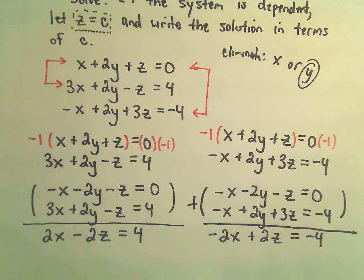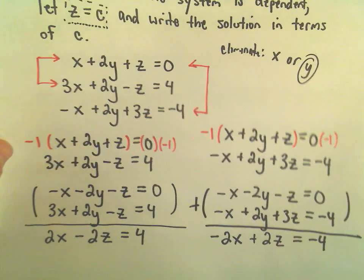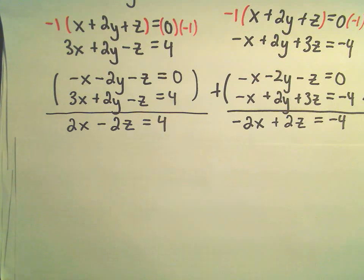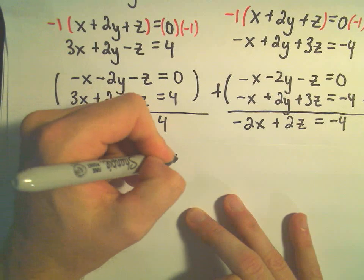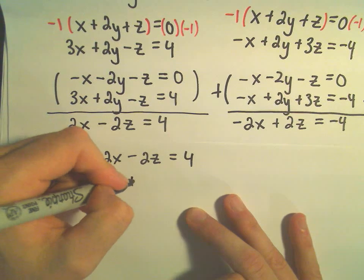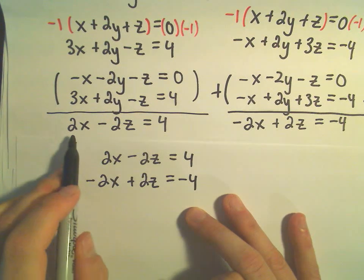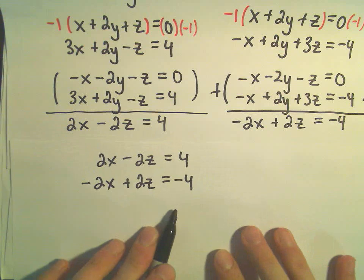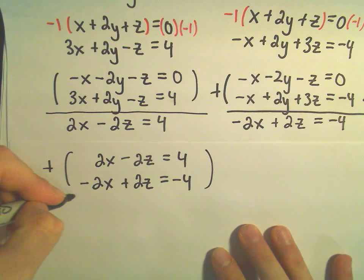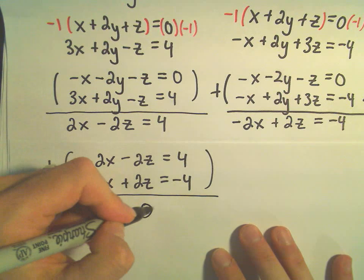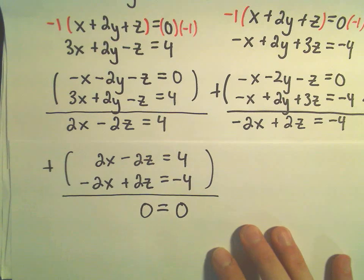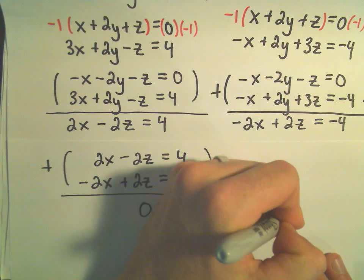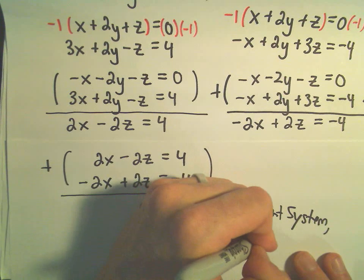So again, I kind of said at the beginning, hey, this is going to be dependent. But suppose we didn't recognize that or maybe you just don't believe me. Again, the idea is now that we've eliminated one of the variables, we've got two different equations. So at this point, we would just try to go from having two variables. We would do our elimination by addition and try to get it down to just a single variable. Okay, so I'm using my equation 2x minus 2z equals 4. That's our top one. This other equation, we figured out negative 2x plus 2z equals negative 4. But again, now everything's kind of set up nicely. If I do my elimination by addition, we would get 0x, 0z. We would have 0 on the left. 4 plus negative 4 is 0. And again, this is telling me at this point that we have a dependent system.